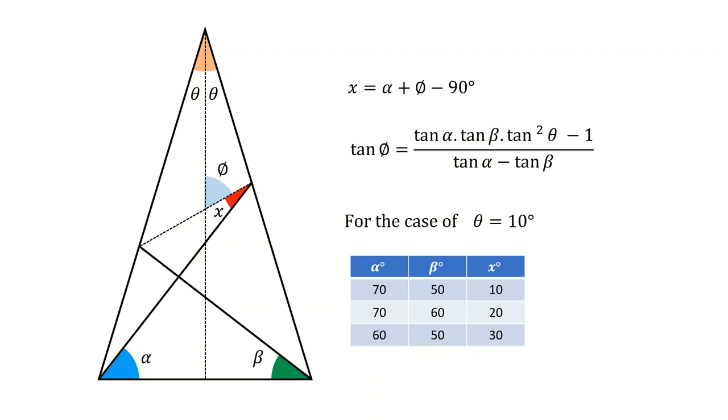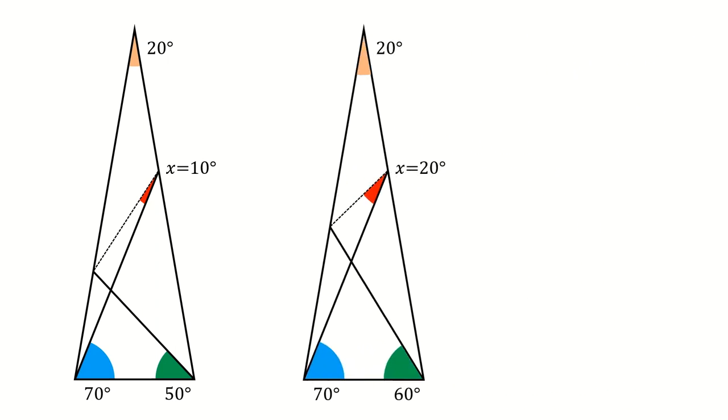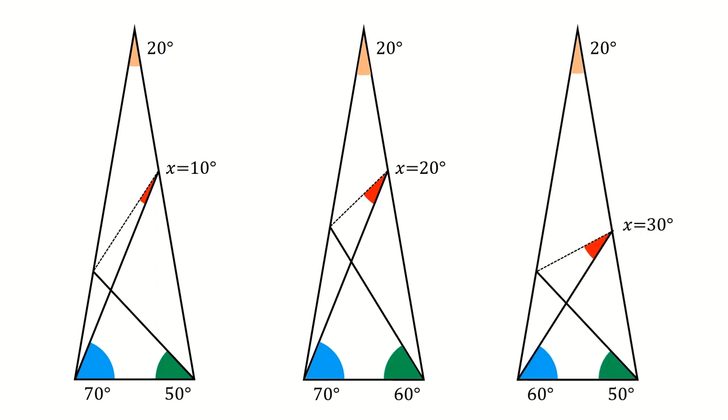You can solve it trigonometrically, but we are not going to go to that. And what you end up with is that, for example, for the case of 70 and 50, x is 10 degrees. For the case of 70 and 60, x is 20, and for the case of 60 and 50, x is 30 degrees.